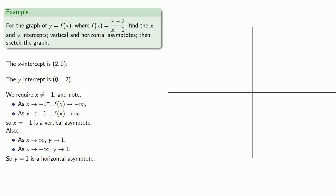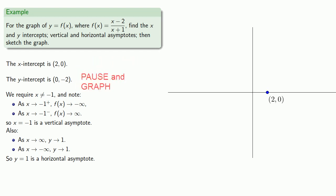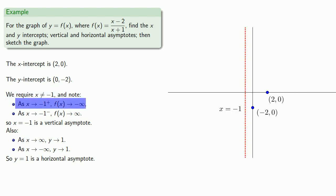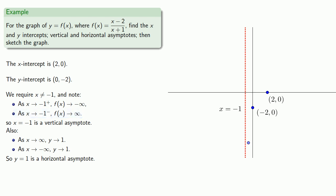Now let's incorporate this information into a graph. We know where the x-intercept is and where the y-intercept is. We require x cannot equal negative 1, so we'll place a vertical asymptote line there. If our x values are close to negative 1 but a little bit more, our y values are negative and large, so there's a point way down here. If our x values are close to negative 1 but a little bit less, our y values are positive and large, suggesting points up here. As x goes to infinity going to the right, our y values get close to 1. Altogether, our graph smoothed out looks something like this.